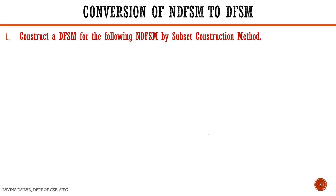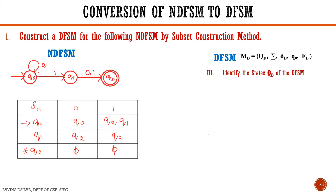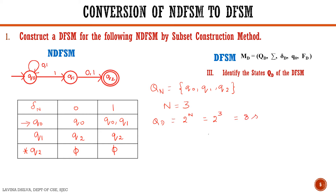The third step is to identify the states QD of the DFSM. We have three states Q0, Q1, and Q2, so N equals 3. Therefore QD equals 2 to the power N, which is 2 to the power 3, equal to 8 states.